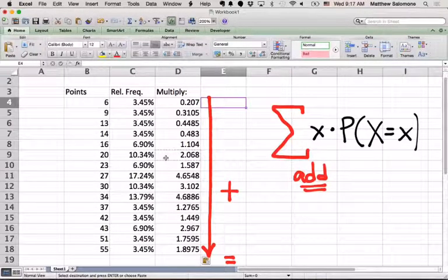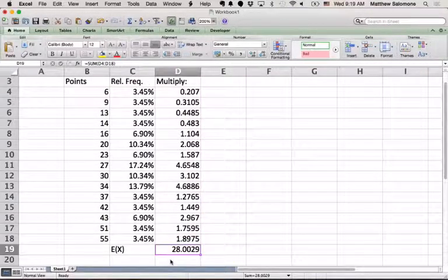So, again, this is easier to do on a spreadsheet than it is by hand. Doing it by hand for smaller examples is not so bad. This one has a lot of different outcomes. So I'm just going to do that calculation really quick. I'm just going to add all these numbers together. So if I add all of those numbers together, I end up with this number down at the bottom that is the expected value of this random variable.